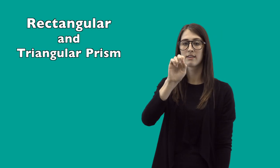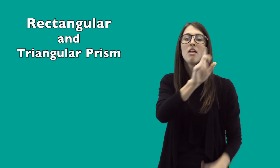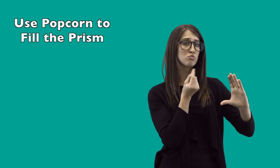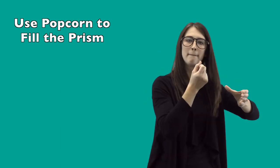So first I tell the students they have to make a rectangular prism, and then they create a triangular prism. Once they have finished making both prisms, they will get the popcorn. They then have to fill up the triangular prism with popcorn and pour it into the rectangular prism. They have to figure out how many times it takes to fill up the rectangular prism using the triangular prism.